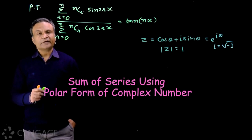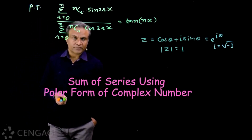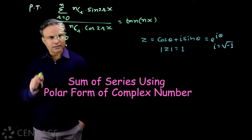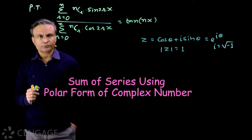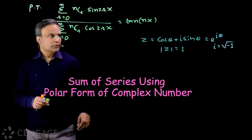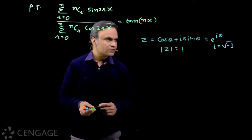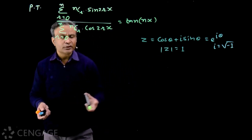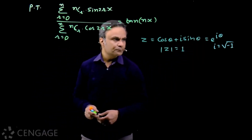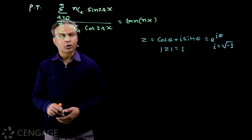Hello friends, we have different applications of polar form and Euler form of complex numbers. One of the interesting applications is finding the sum of a series using this form. If a complex number Z has modulus 1, its polar form is Z = cos θ + i sin θ, and its Euler form is e^(iθ), where i is the imaginary number equal to the square root of minus 1.